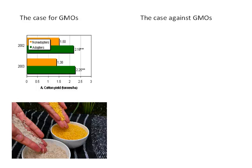Golden rice is rice that's been genetically modified to have increased amounts of vitamin A, which is what gives it that golden color. Vitamin A is found in a lot of your orange and yellow vegetables like carrots. In large parts of the world, even though there may be adequate food in terms of total calories, there are certain nutrient deficiencies like vitamin A deficiency.